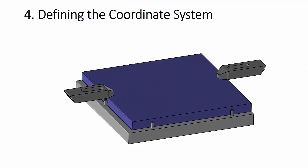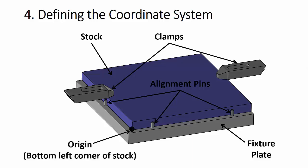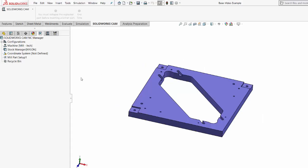Now we're ready for step four where we can define the machining coordinate system. This graphic shows how we're going to hold the part on the Haas mill while we're machining it. We have a fixture plate mounted to the Haas machine in the MakerLab. We'll place the stock on the fixture plate and push it up against the alignment pins. Once it's pushed up against the alignment pins, we'll tighten down the clamps to hold it in place. Because those alignment pins are along the left side and the bottom edge, this is what we've defined on the machine as the origin.